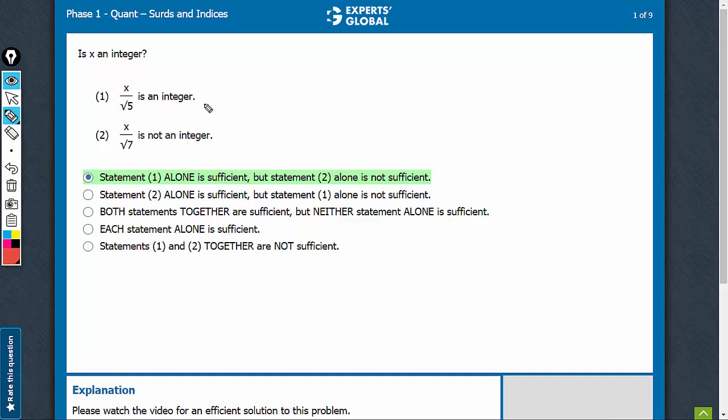Is x an integer? Statement 1: When x equals root 5, x over root 5 is an integer, and the answer is no—x is not an integer.